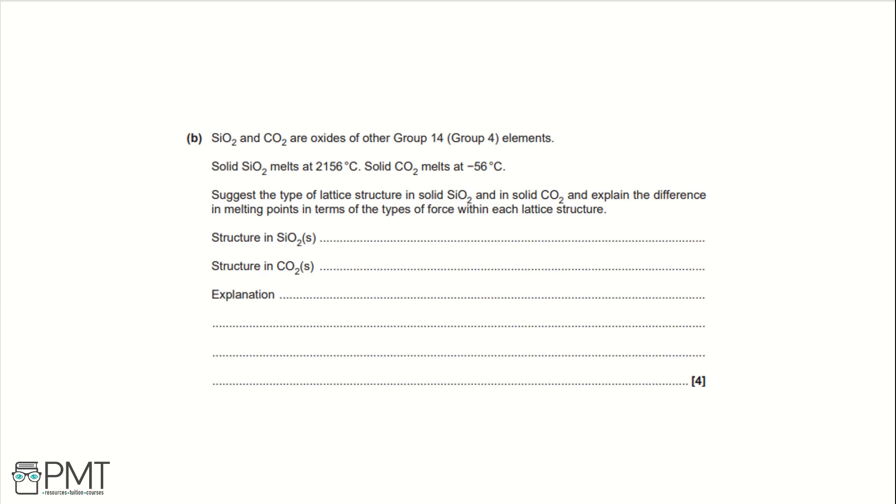SiO2 and CO2 are oxides of other Group 14 or Group 4 elements. Solid SiO2 melts at 2156 degrees Celsius. Solid CO2 melts at minus 56 degrees Celsius. Suggest the type of lattice structure in solid SiO2 and in solid CO2, and explain the difference in melting points in terms of the types of force within each lattice structure. The structure in SiO2 is a giant covalent lattice, and in CO2 it's a simple molecular covalent lattice.